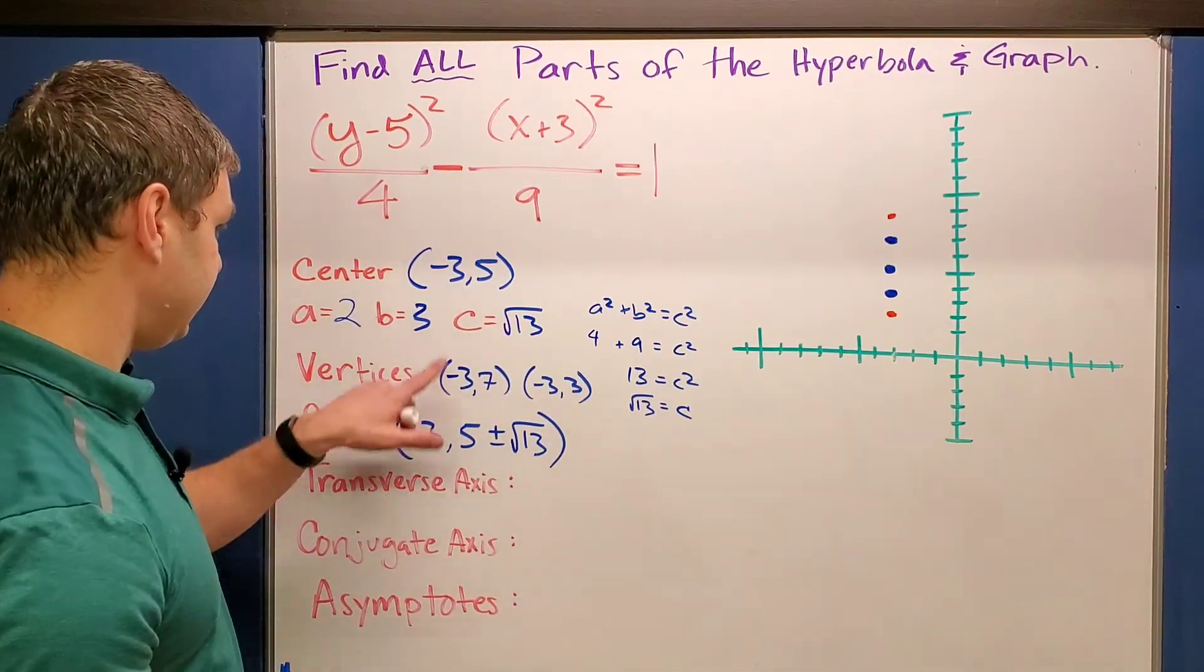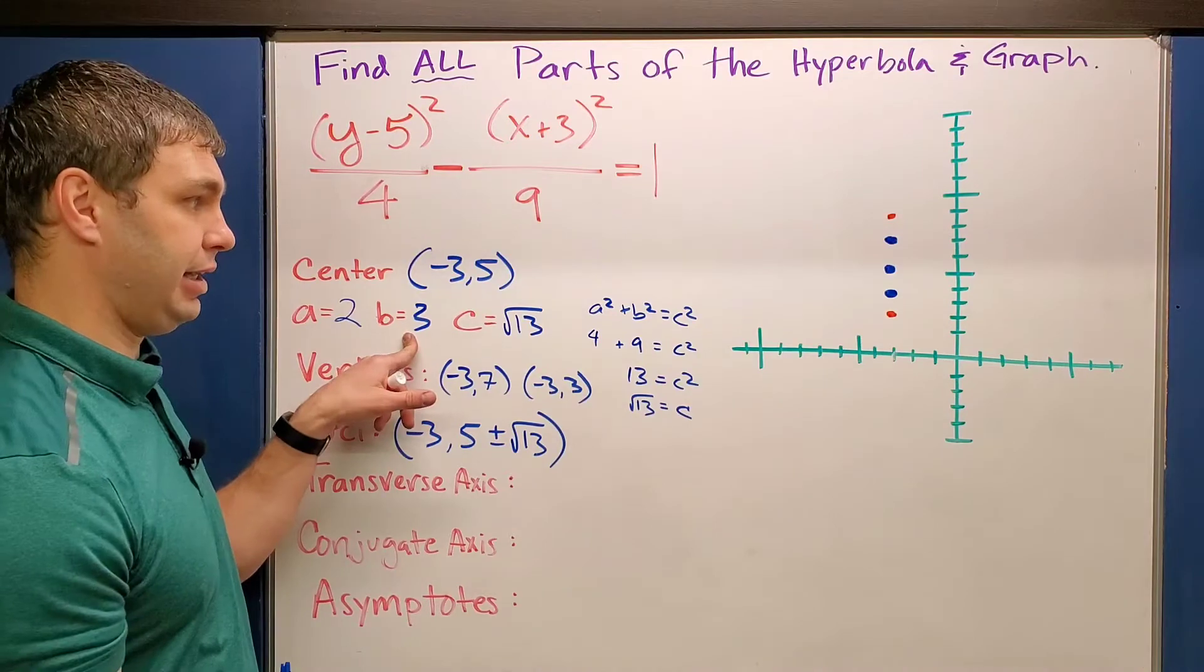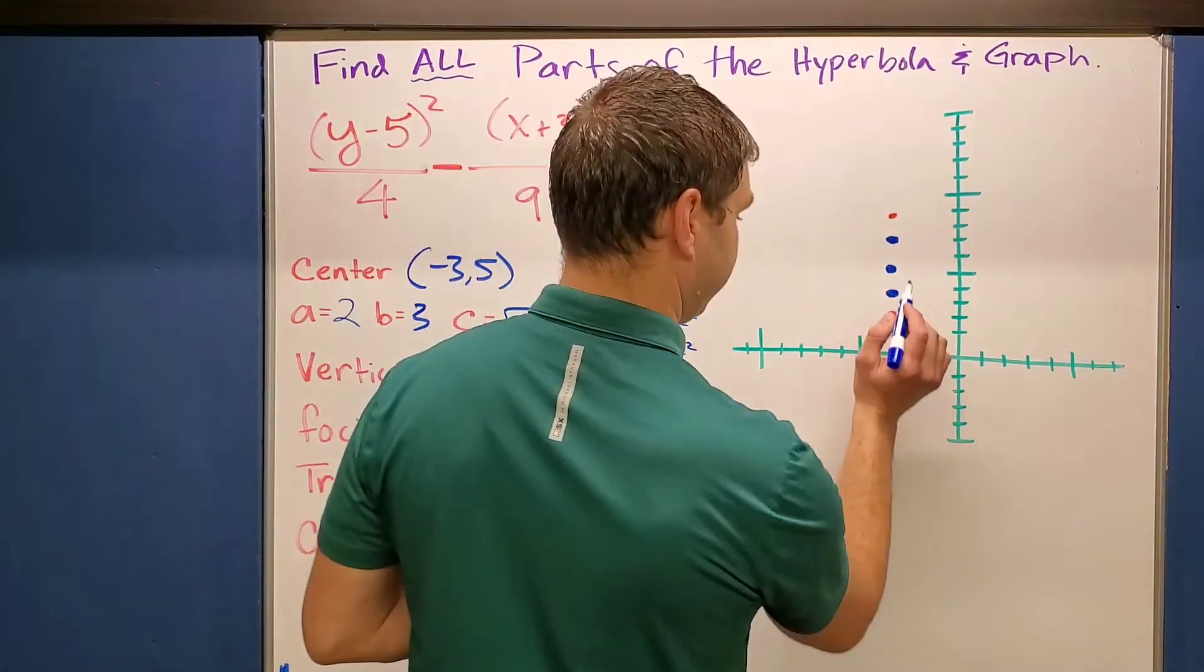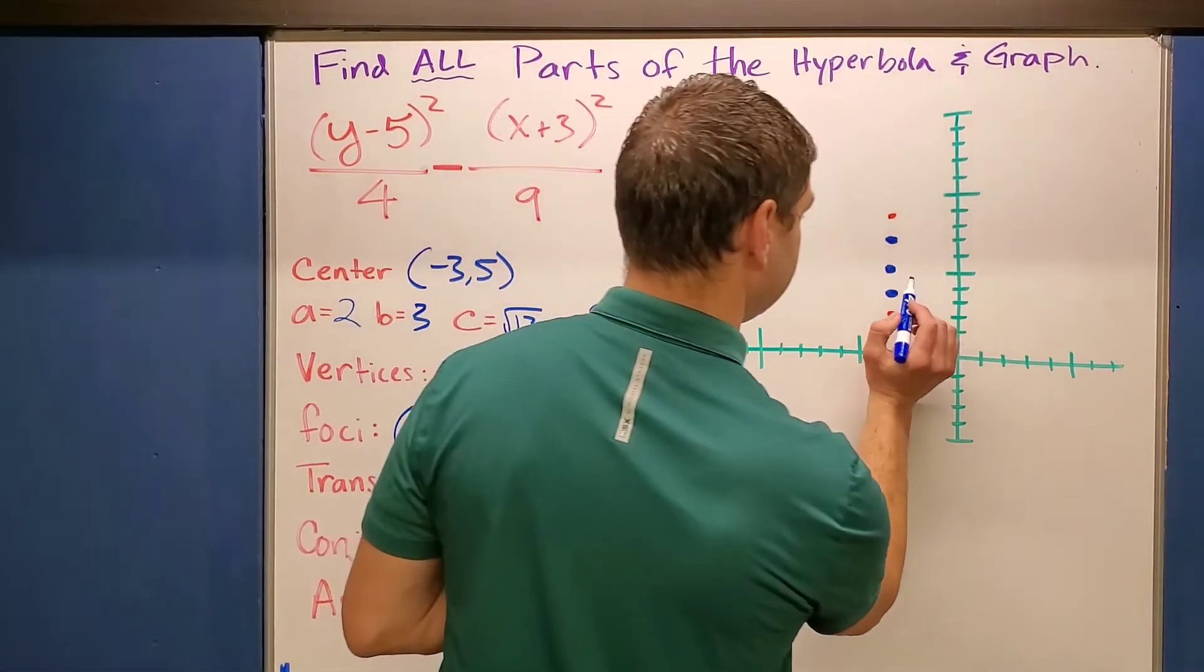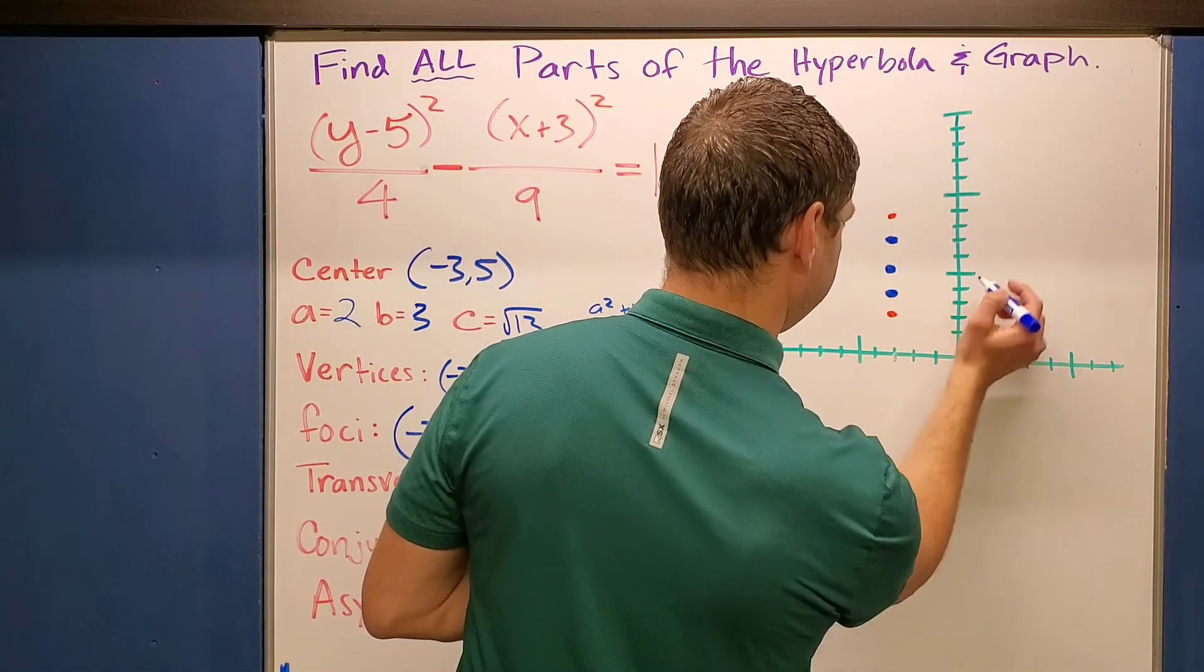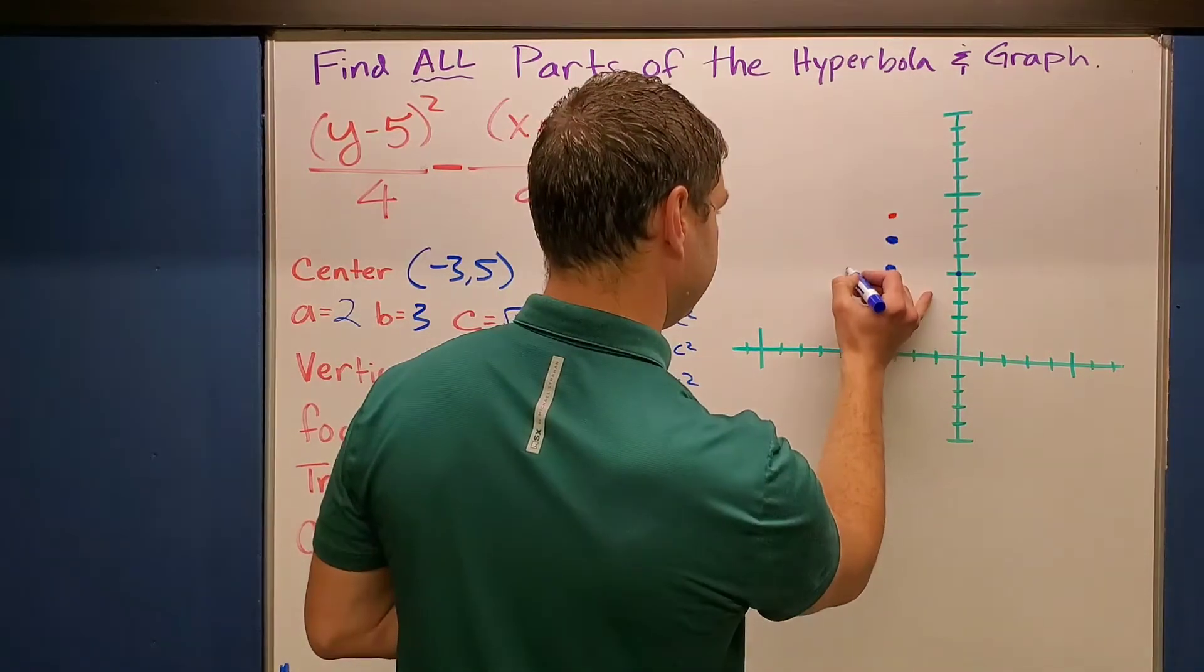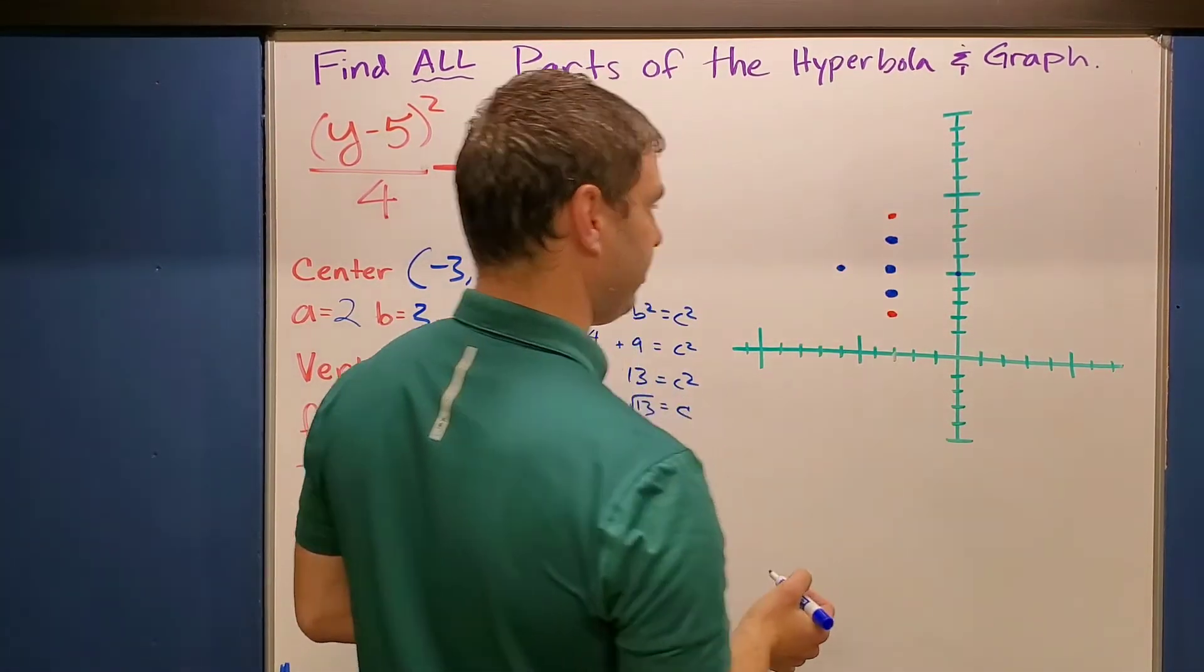A couple other things that I need here is I haven't done anything with the b yet. So the b is going to be out three dots or three spots in each direction, units, I should say. So let's see. One, two, three gets me back to my y axis over there. Then over here, one, two, three, just like that.